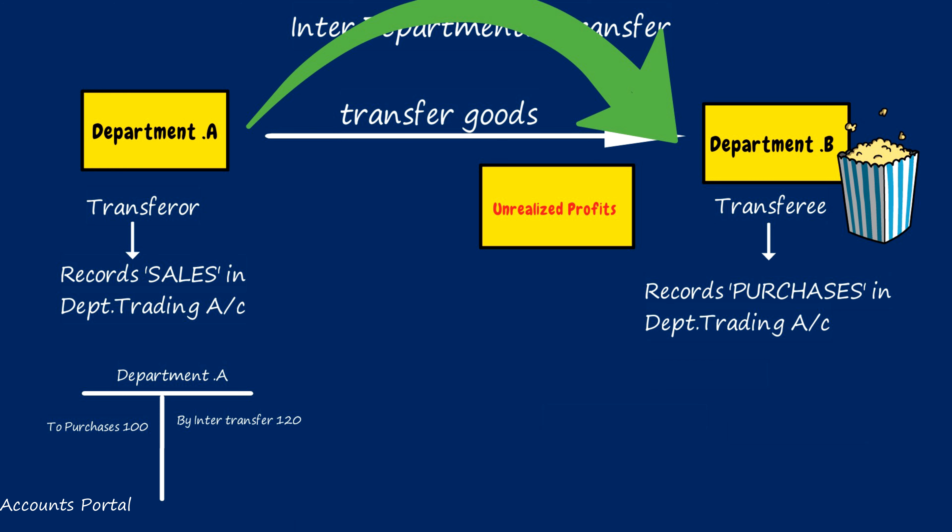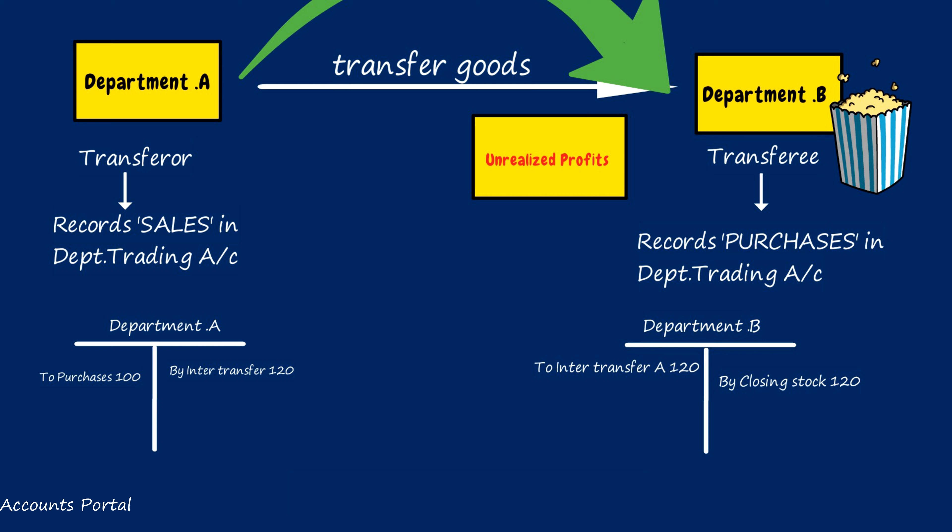For example: Department A has a cost price of ₹100 and transfers goods to Department B for ₹120. A has booked a profit of ₹20. B has not sold the goods, which means there is an unrealized profit of ₹20. From the company's point of view, A transferring to B at a profit is not a real profit for the business.